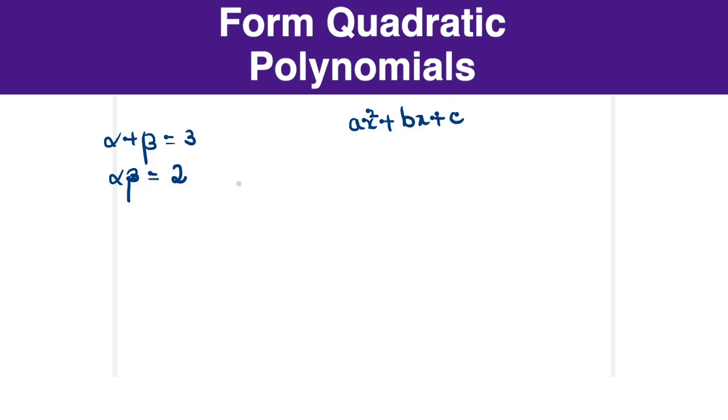The general form of a quadratic expression given alpha beta and alpha plus beta is x² minus (alpha plus beta)x plus alpha beta. So if I have this value as 3 for alpha plus beta and 2 is alpha beta, the equation is x² minus 3x plus 2.